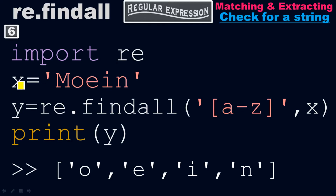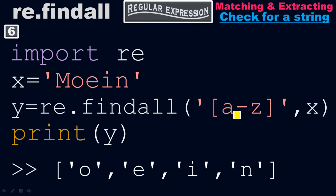Here x equals 'moin' — this information is saved with the name x. Then y equals re.findall([a-z], x). The range is from a to z but in lowercase. We are checking the string for lowercase characters only, so it will return only lowercase characters: o, e, i, n. It will skip M because M is in uppercase — this range is only for lowercase.